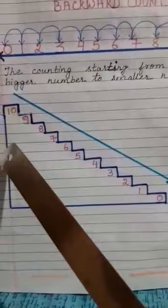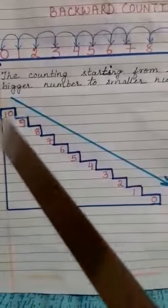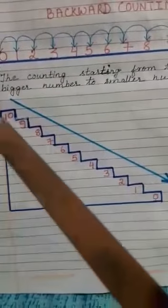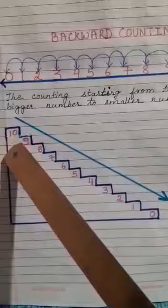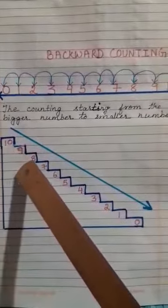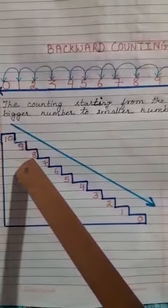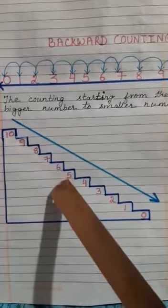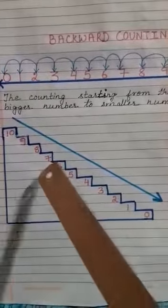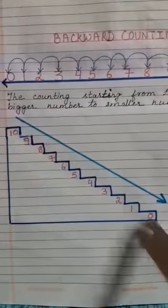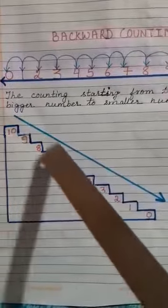See, even I have drawn some stairs for you. See, so it starts from 10. Like 10, 9, 8, 7, 6, 5, 4, 3, 2, 1, 0. From bigger number to small number, so it goes downwards.